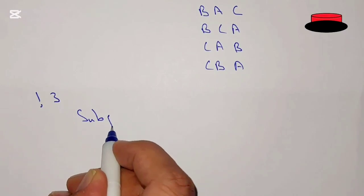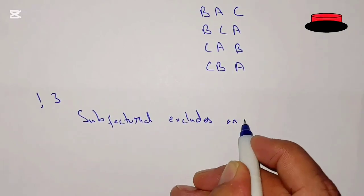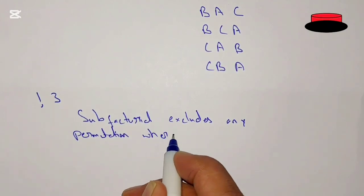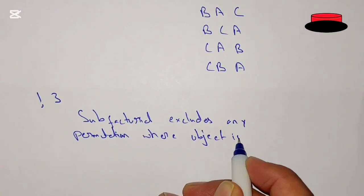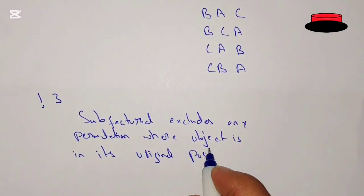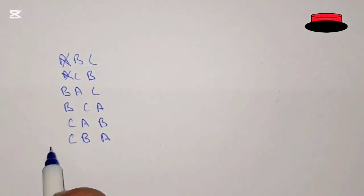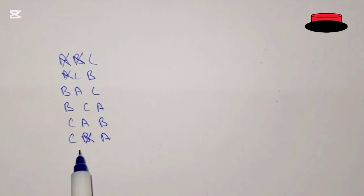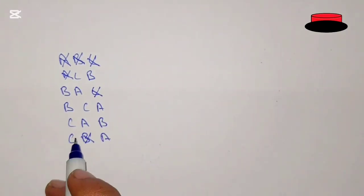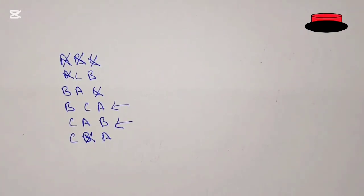And now we go to sub factorial 3. So what is sub factorial? The sub factorial excludes any permutation where the object is in its original position. So the original position of a is the first position — we exclude that permutation. b is in the second position — we exclude that. c is in the third position — we exclude that. So we are only left with 2 permutations, meaning the answer of sub factorial 3 is 2.